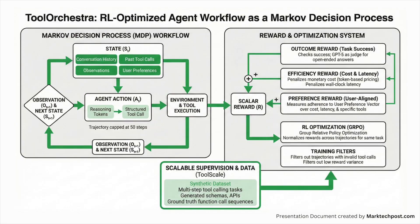Tool Orchestra frames the full agent workflow as a Markov decision process where the state includes conversation history, past tool calls, observations, and user preferences, and each action is the next text step that may contain both reasoning tokens and a structured tool call, with a trajectory capped at 50 steps and scored by a single reward. This reward mixes three components: an outcome reward that checks task success and uses GPT-5 as a judge for open-ended answers; efficiency rewards that penalize monetary cost and wall-clock latency using token-based pricing for each tool; and a preference reward that measures how closely tool usage follows a user preference vector over cost, latency, and specific tools — all combined into one scalar via that vector.